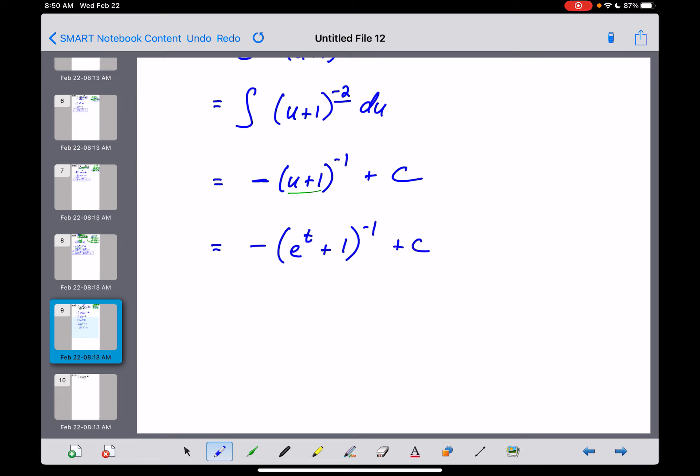Now, that answer would get full credit in my book. It wouldn't shock me if they maybe wrote it a different way and made it a fraction. Now, negative 1 over, and then an e to the t plus 1. Take that negative first power, move it down to the bottom of your fraction there, and a plus c at the end. So I think either one of those answers there looks pretty darn good. And yeah, you'd get full credit for either one of those. Okay, so that is problem number 69.